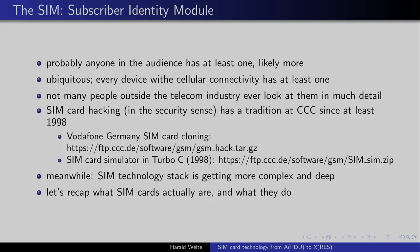SIM card hacking has a tradition at CCC since at least 1998. There was the Vodafone Germany SIM card cloning attack back then — in German titled 'Von D2 Privat zu D2 Pirat.' That was an attack that used weaknesses and brute forcing against the authentication mechanism to recover the secret key stored in the card, allowing you to clone SIM cards. That was fixed in subsequent technology generations. Also around that time you can find on the CCC FTP server a SIM card simulator written in Turbo C using a season card — cards people used for cracking satellite TV encryption.